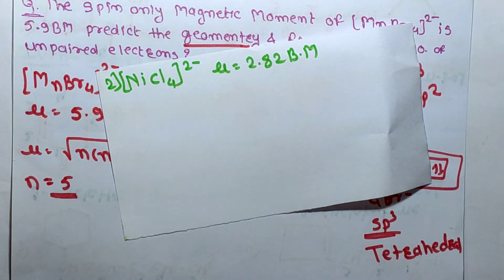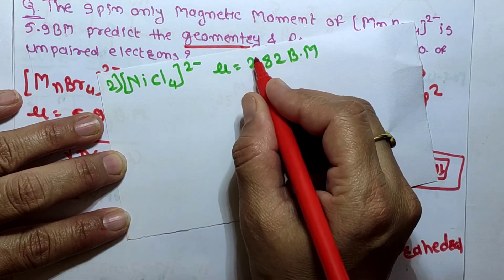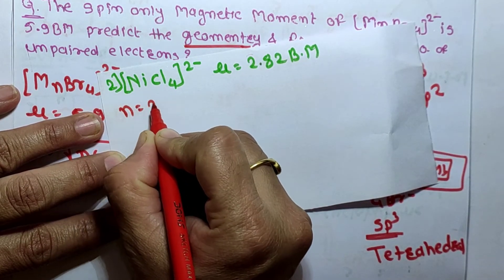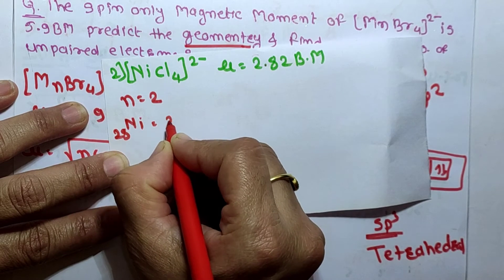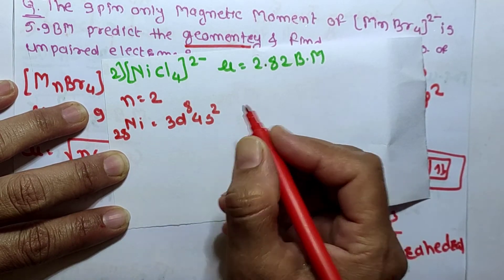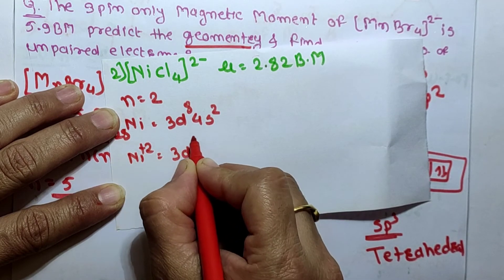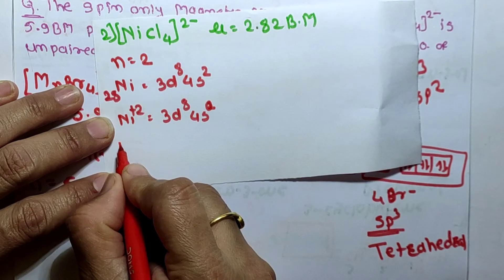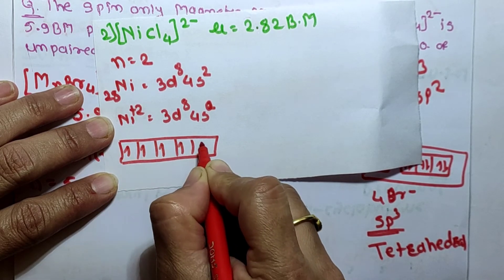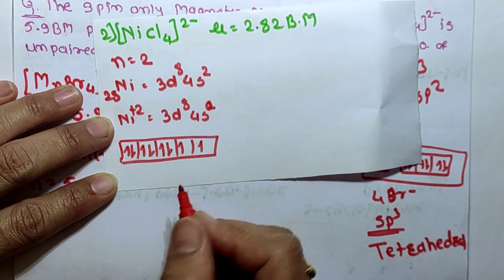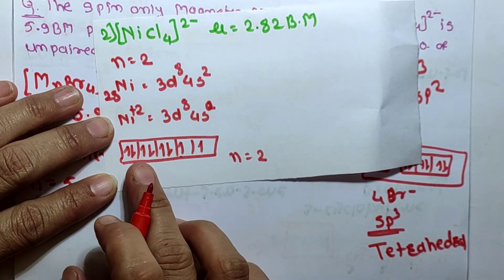Next, for [NiCl₄]²⁻ having spin magnetic moment 2.82 Bohr magneton: 2.82 BM means 2 unpaired electrons, so n = 2. To verify: Ni has atomic number 28, configuration 3d⁸ 4s². In Ni²⁺ oxidation state, the configuration is 3d⁸ 4s⁰. The d orbitals contain 8 electrons (1,2,3,4,5,6,7,8), giving 2 unpaired electrons. Hence n = 2, confirmed.